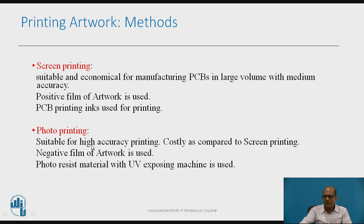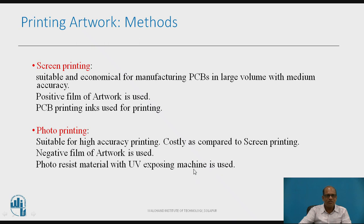The second method is photo printing. In photo printing, the material used is a photo resist. Photo resist is a material that, when exposed to ultraviolet rays, its properties change, while the unexposed portion has no reaction — this is a photochemical reaction. A photo resist material with a UV exposing machine is used, and a negative film of the artwork is used for preparing the PCB. This technique is suitable for printing with high accuracy and is costly compared to screen printing.